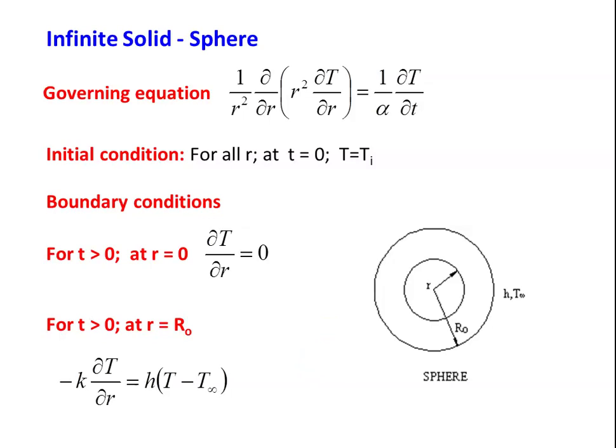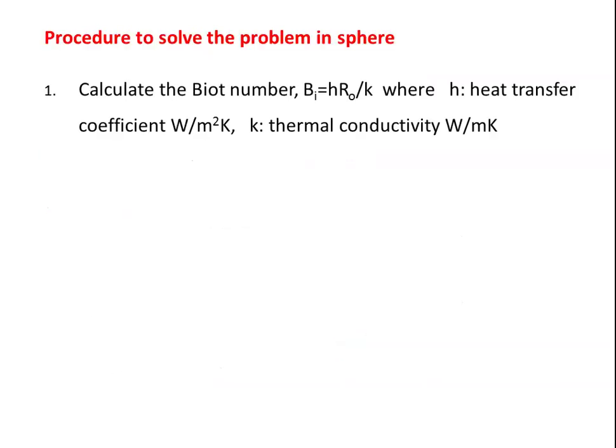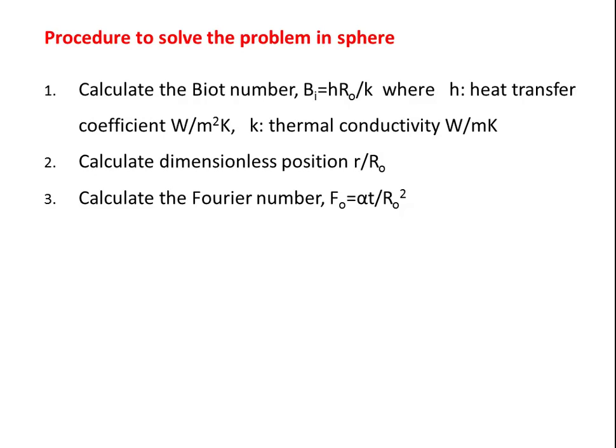To solve the problem, an analytical solution is available, but at undergraduate level we solve problems using the Heisler and Groper chart. The procedure: first, calculate the Biot number, Bi = h·r_o / k, where h is the heat transfer coefficient and k is the thermal conductivity. r_o is the outer radius. Then calculate the dimensionless position r/r_o. Then calculate the Fourier number, Fo = α·t / r_o², where α is the thermal diffusivity and t is the given time.